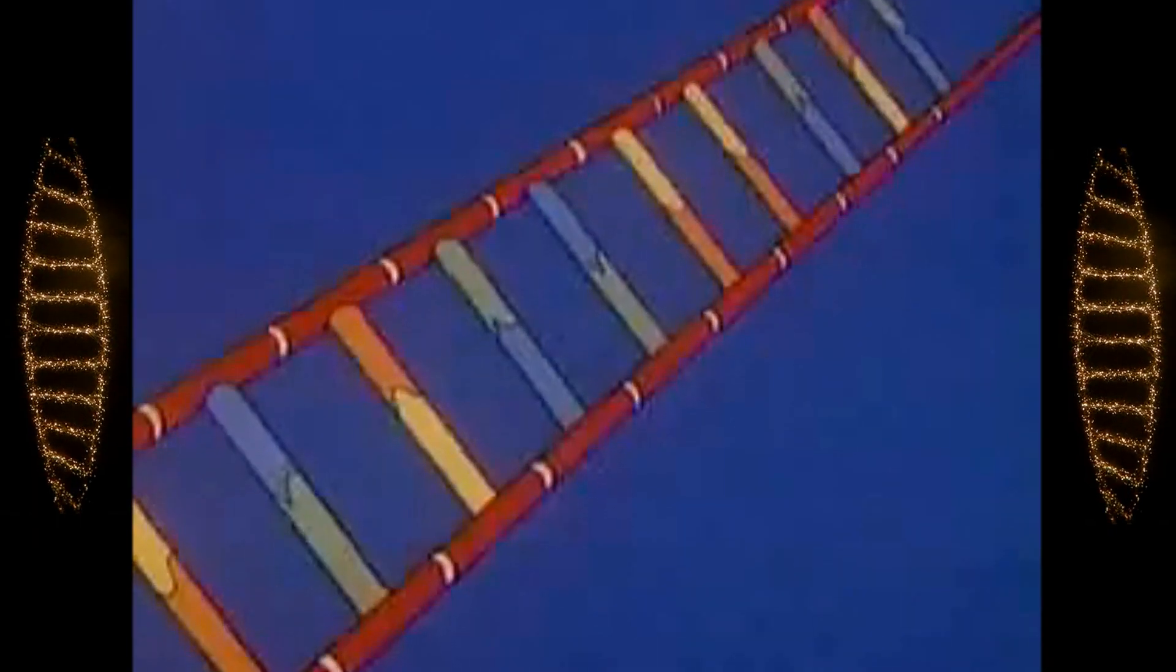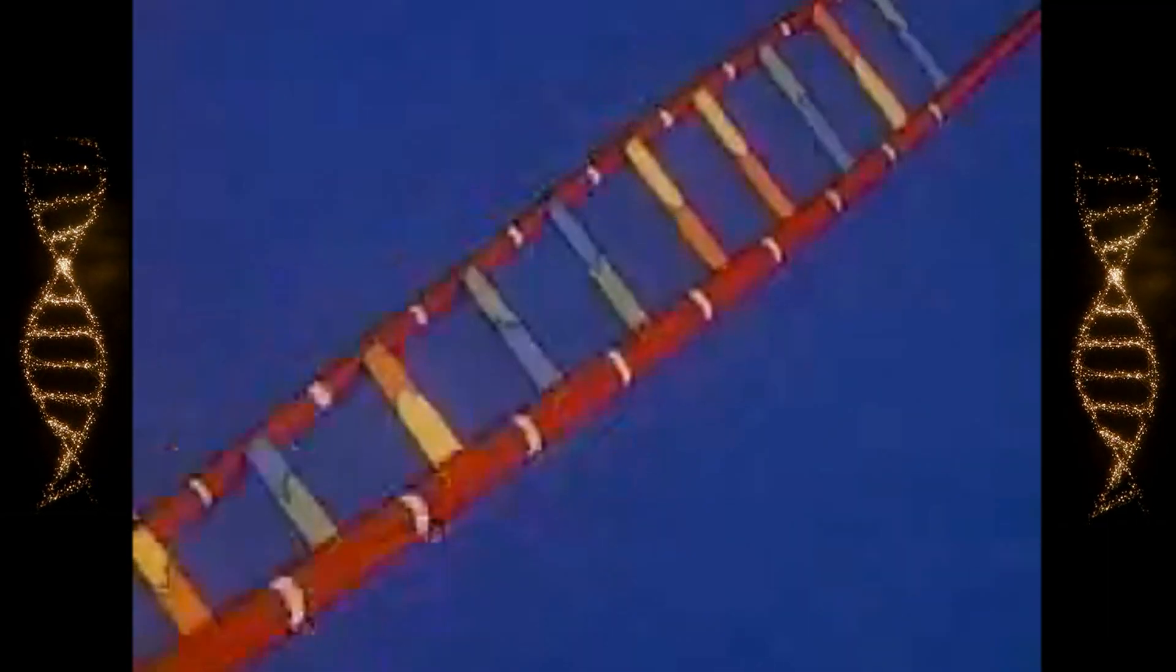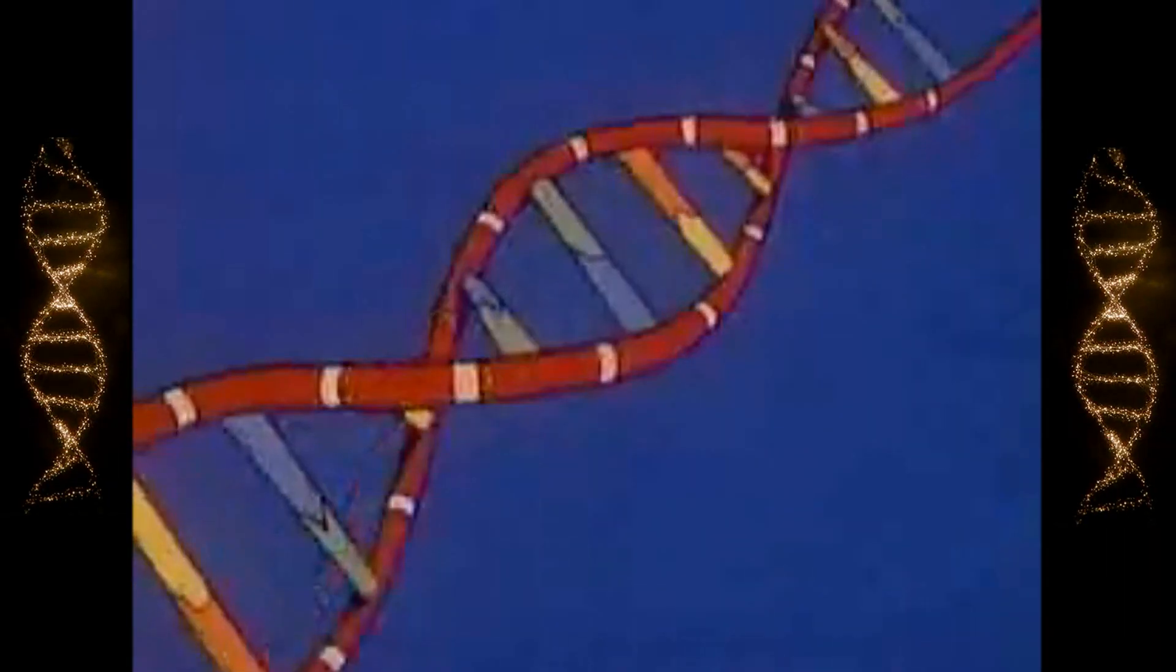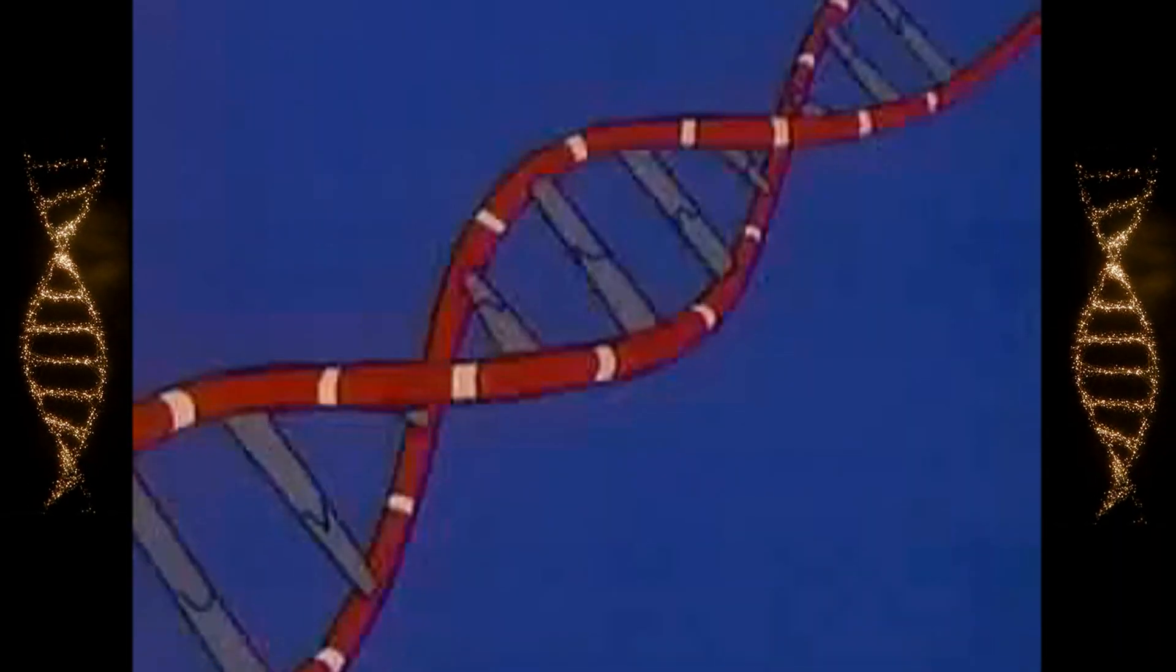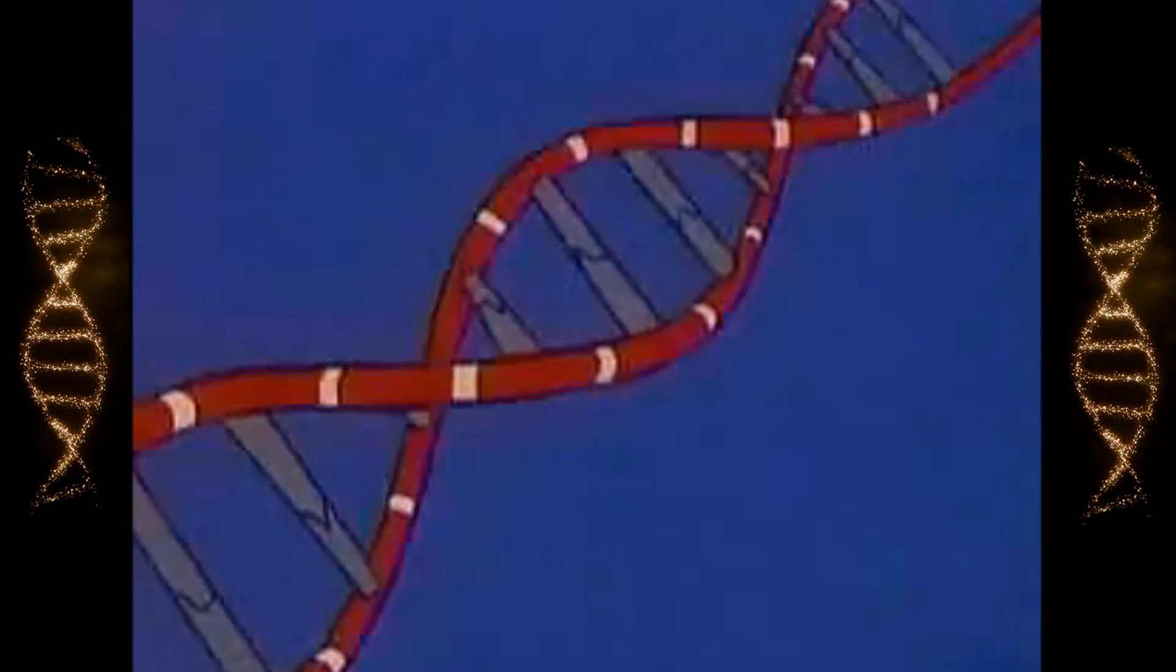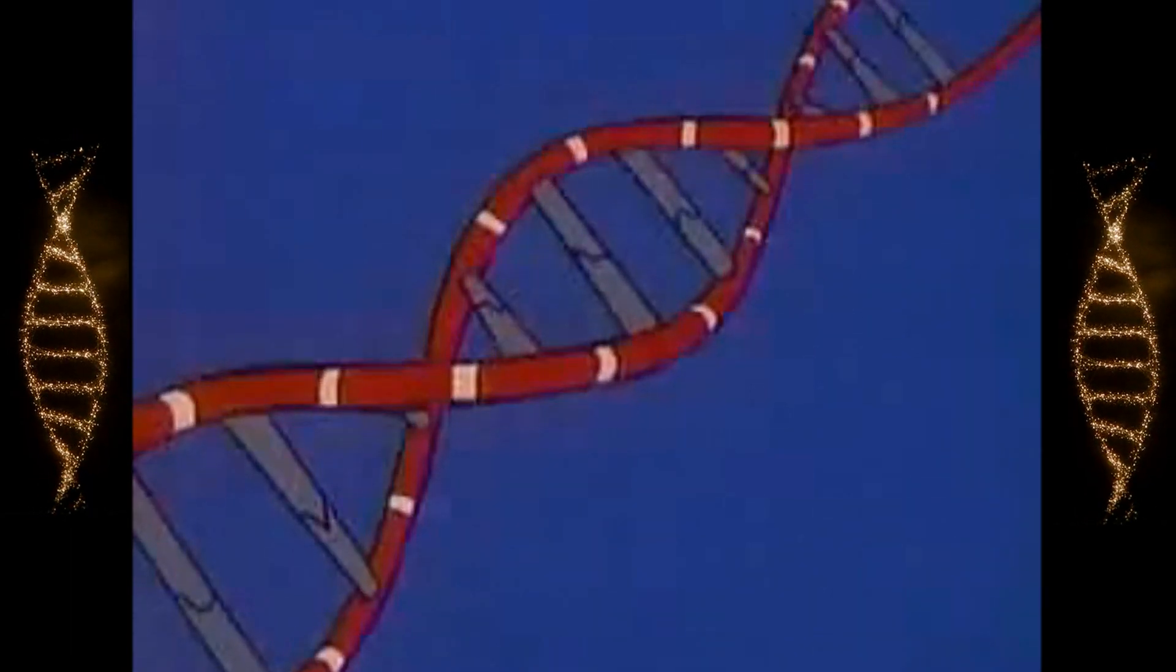In this simplified illustration a DNA molecule resembles a ladder that becomes twisted. The sides of the ladder are formed of sugar and phosphates which alternate in a regular pattern.